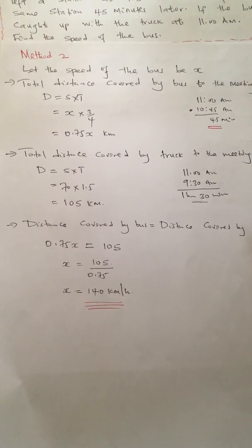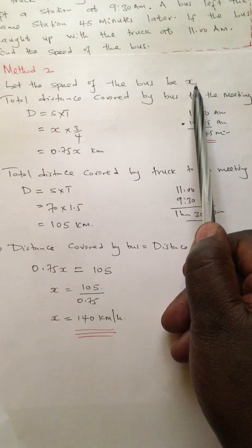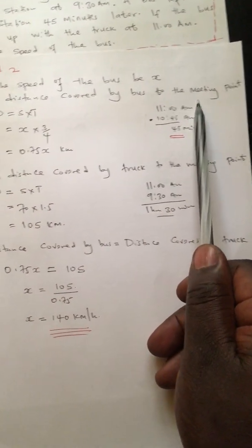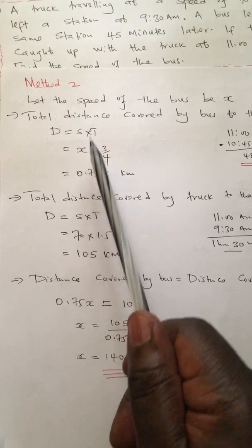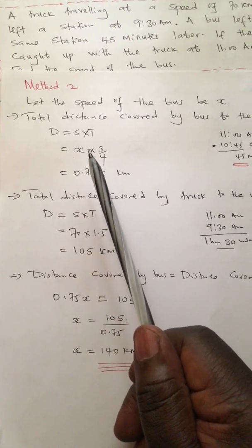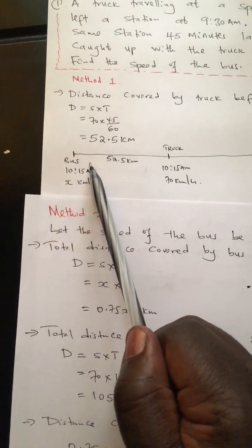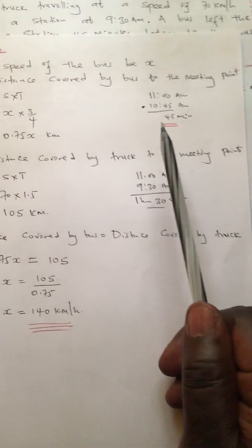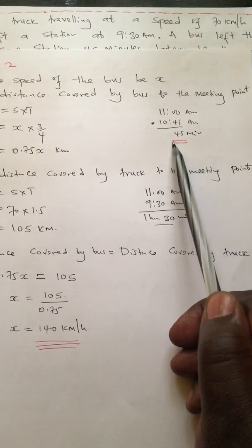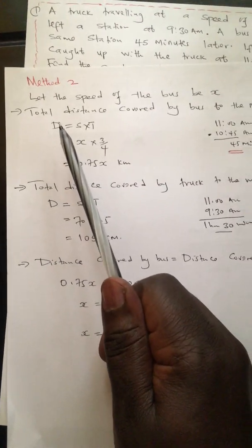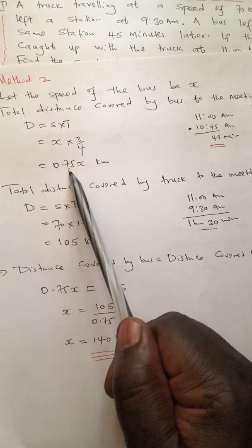Since we don't know the speed of the bus, let the speed of the bus be x. The bus moved from 10:15 to 11, which is 45 minutes or 0.75 hours. So the distance the bus covered is x times 0.75, which equals 0.75x. The distance is in terms of x because we don't know its value.